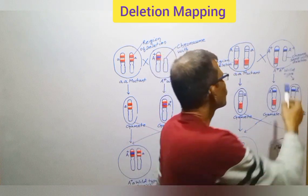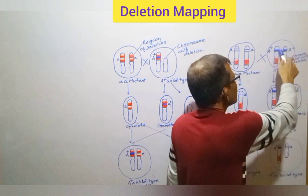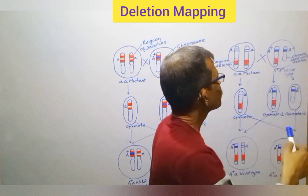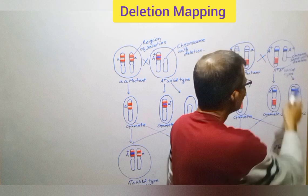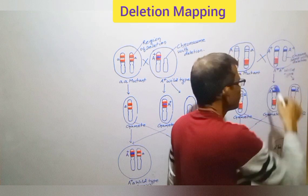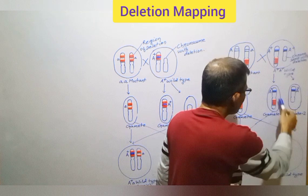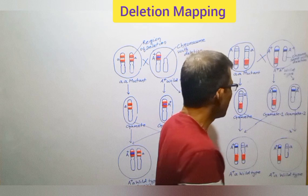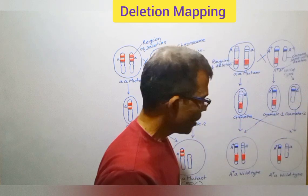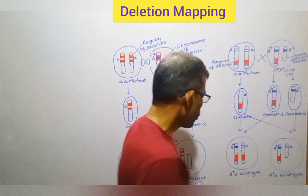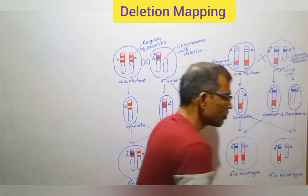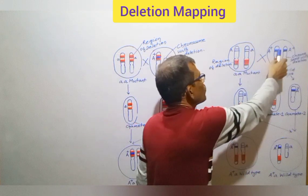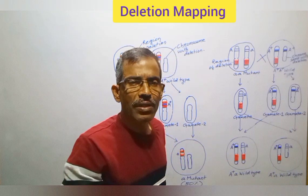But the heterozygous parent will form two types of gametes. This is because one chromosome is normal having a wild-type allele, and the remaining member of the homologous pair has a deletion. Both of the chromosomes have the wild-type allele. So here, the two types of gametes which are formed by the heterozygous parent will have the wild-type allele. As a result, after fertilization, all progenies will be of wild type. Such results indicate that the gene of interest is not located within the region of deletion.